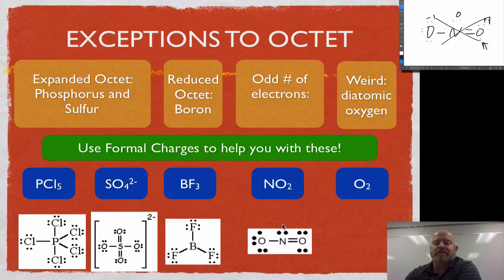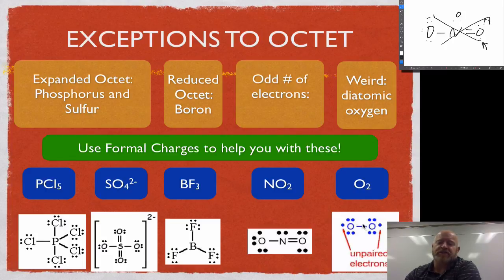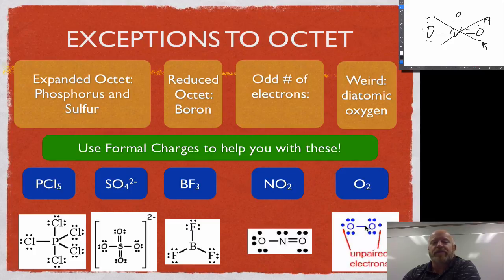The last exception to the octet rule is oxygen — there's really no great reason why it does it, it's just an exception. For oxygen, it's a weird scenario, but oxygen actually does not double bond the way you'd expect. It actually has a single electron that is not paired on both sides. In fact, if you look up oxygen online, most chemistry teachers will even tell you it's a double bond, but the reality is oxygen is not double bonded — it actually has a single bond with individual electrons on the outside. One way we can determine how this happens has to do with magnetism.